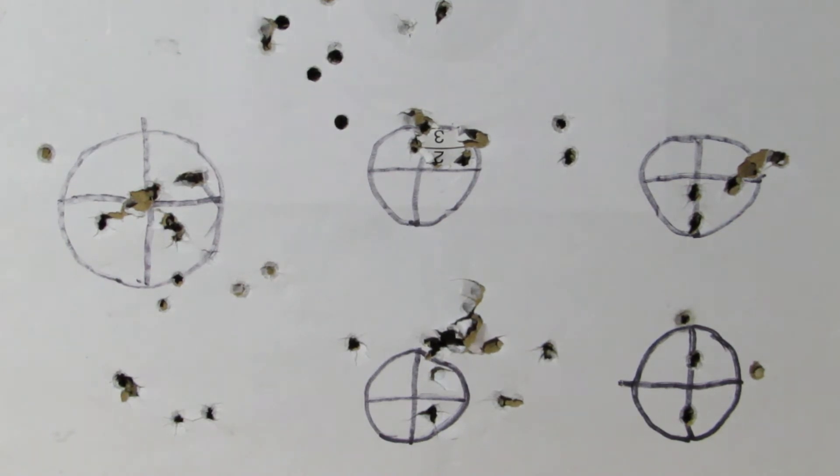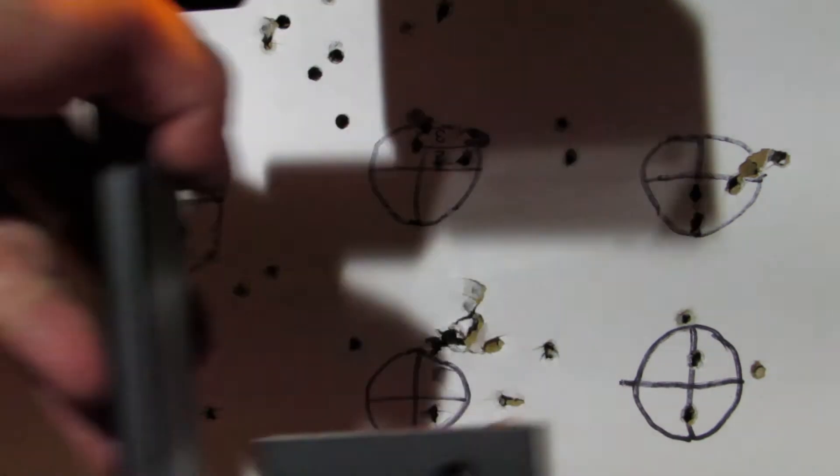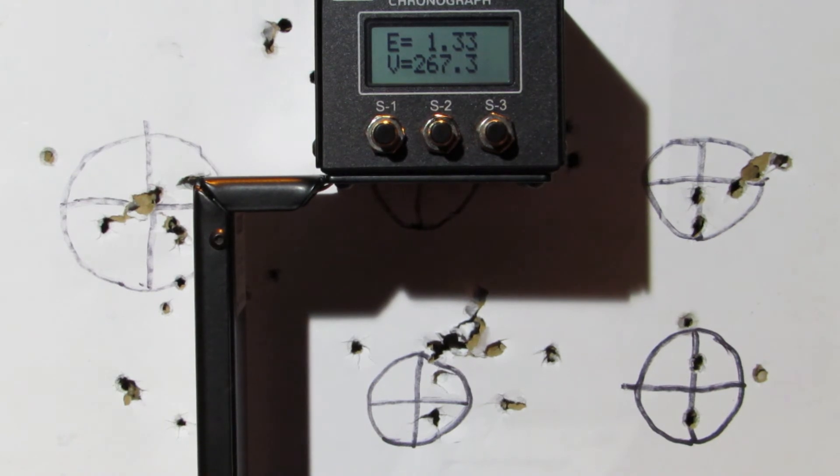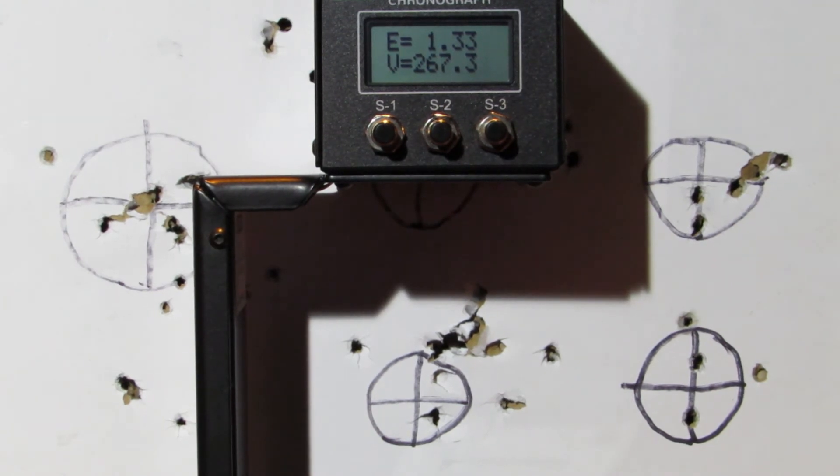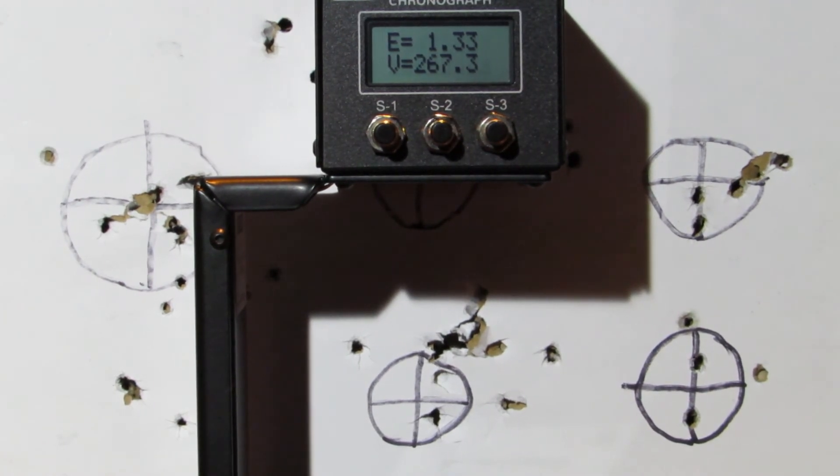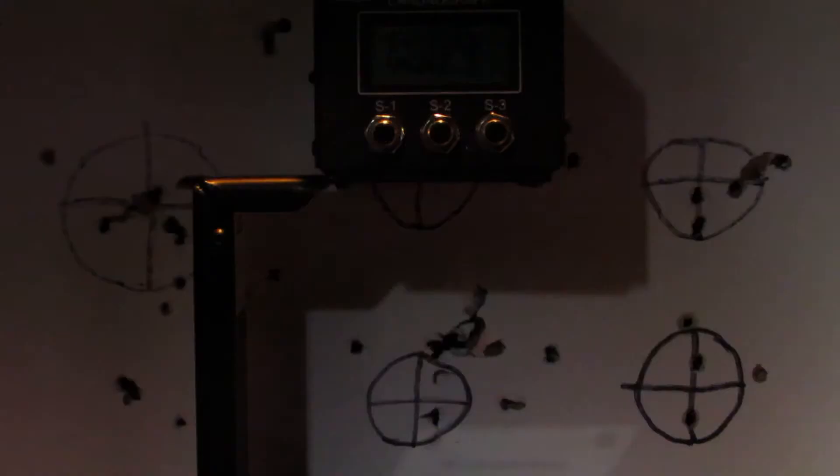So the lighter pellet gave it more foot poundage. I will convert all these figures to joules at the end, for the guy that asked the question. And in the next video, we're going to adjust the gun, stack some washers in behind the spring, and see if we can increase the foot poundage. So, see you on the next video. Thank you.